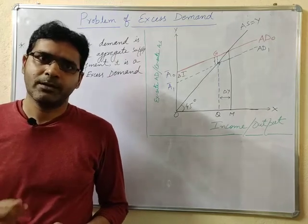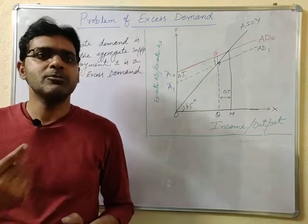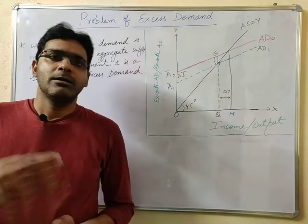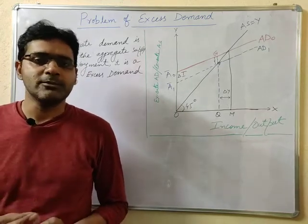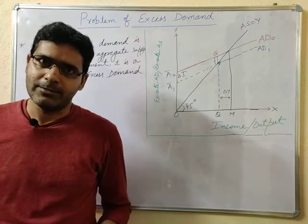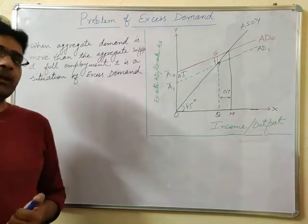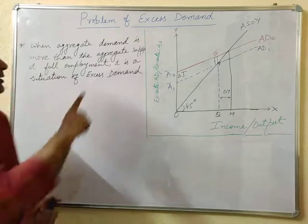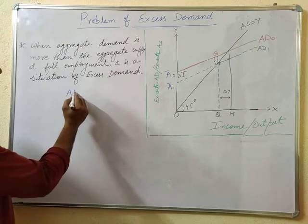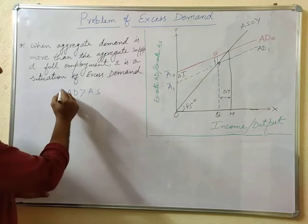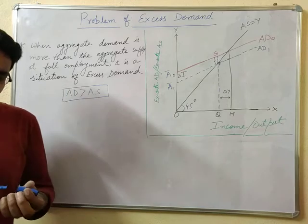When the equilibrium level of income or output is greater than the full employment level of income and output, it is due to the fact that aggregate demand becomes more than the aggregate supply at full employment. This situation is called excess demand. In short, when AD is greater than AS at full employment, it is a situation of excess demand.